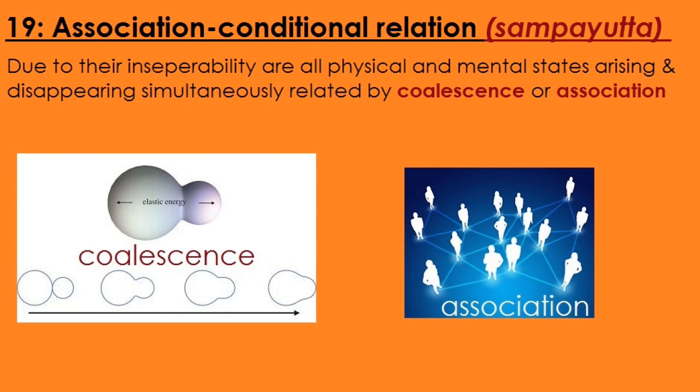The 19th is the association conditional relation — Sampayutta. Due to their inseparability, all physical and mental states arising and disappearing simultaneously are related by coalescence or association — unified in the same way as two water droplets coalesce, or as people are associated in a professional association. They are associated and cannot be separated. No separation is possible between the causes and the effect. This is the association conditional relation, Sampayutta, number 19.